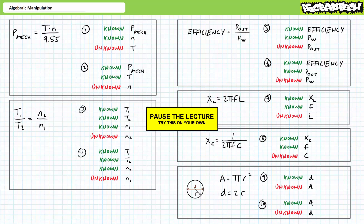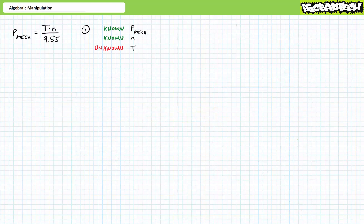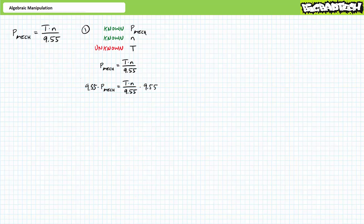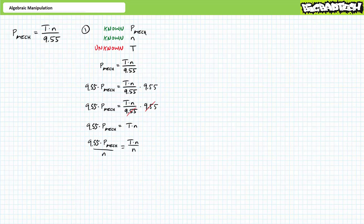By all means, pause the lecture and try this on your own. If you're tracking, you should obtain the following results. Our first problem features the rotating mechanical power formula: rotating mechanical power equals torque T times rotational speed N divided by 9.55. We're asked to solve for unknown torque given known mechanical power and known speed. Unknown property T is being multiplied by N and divided by 9.55. Multiply both sides by 9.55 — 9.55 cancels on the right. Divide both sides by N — N cancels on the right. We're left with T equals 9.55 times mechanical power divided by N.